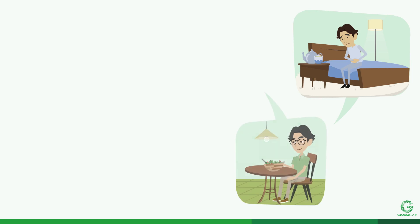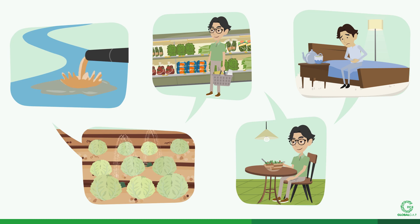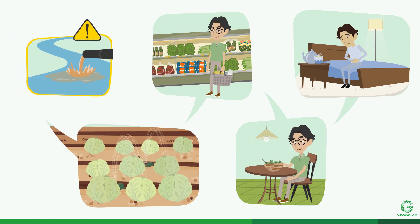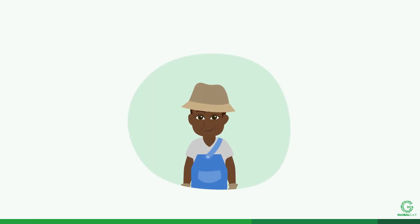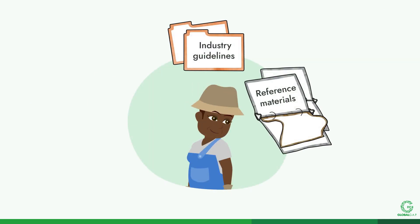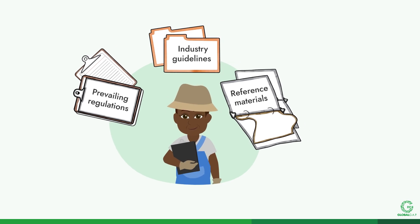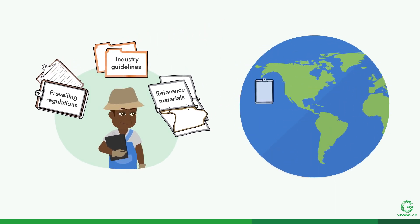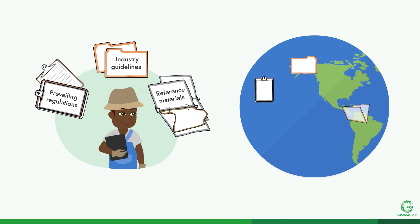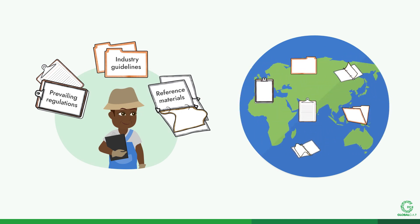As foodborne illnesses in fruit and vegetables have been associated with contaminated water, risk assessments for pre- and post-harvest water are of critical importance. Producers should use industry guidelines, reference materials, and prevailing regulations when developing procedures. Some countries have additional requirements for agricultural water quality, so it is essential to consider prevailing regulations.